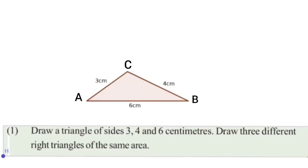First, we can draw a triangle with sides 3, 4, and 6 cm. That gives us our original triangle. We need three different right triangles — different right triangles are non-congruent. If we have one right triangle, we can find different right triangles with the same area. The first base is 6 cm. Let us draw a triangle with a 6 cm base.